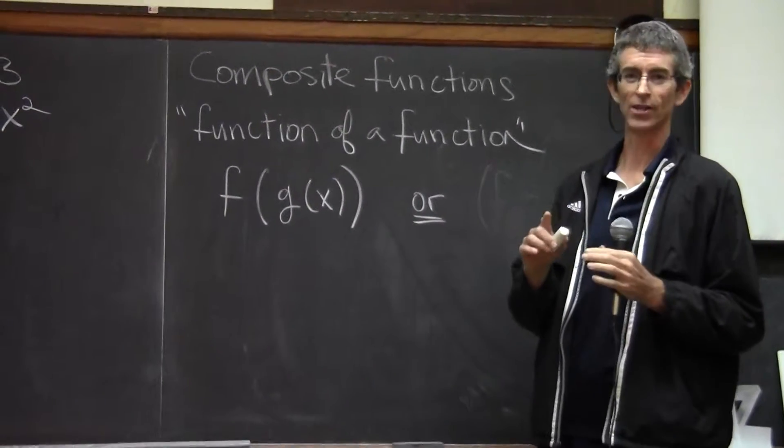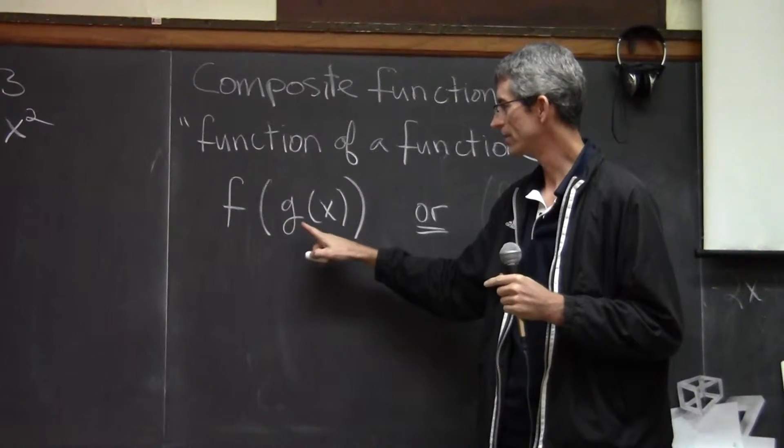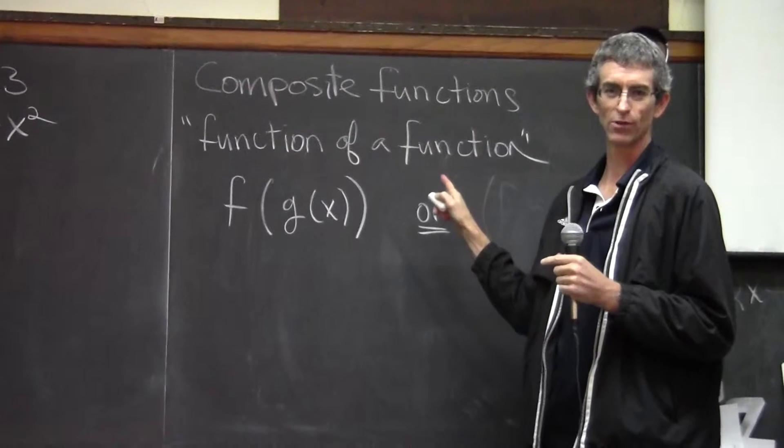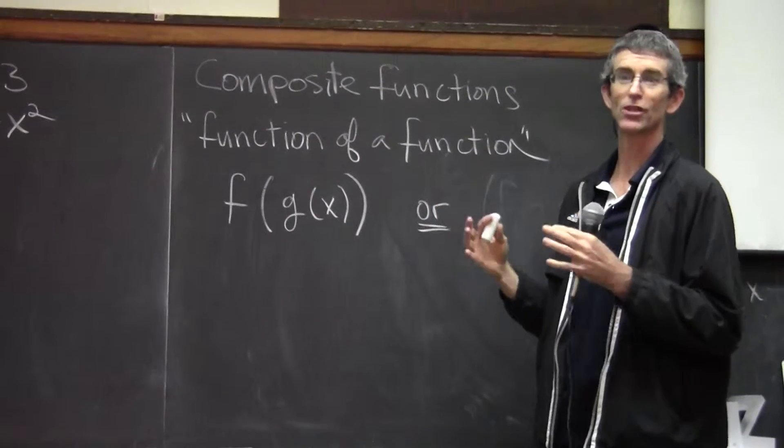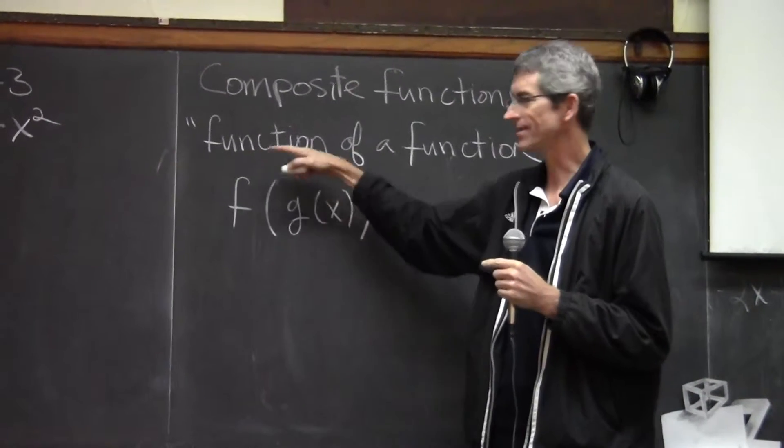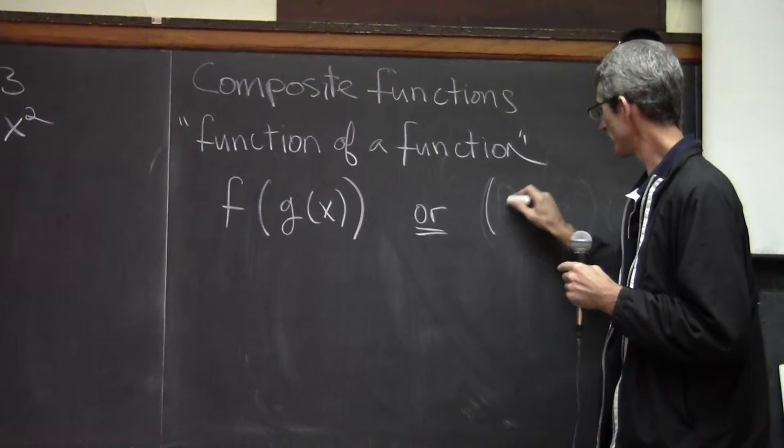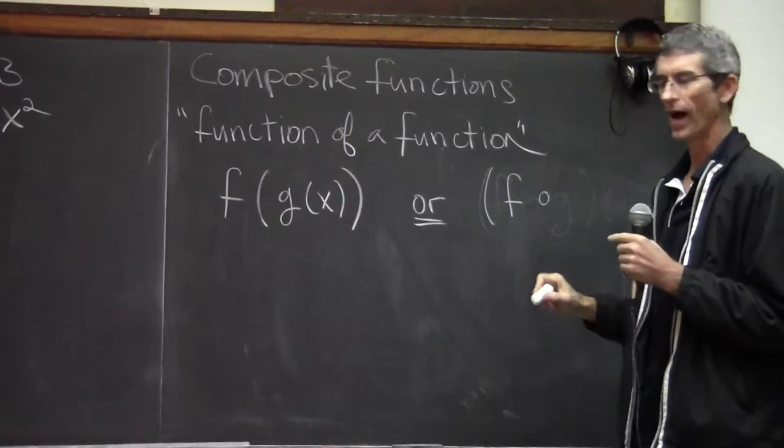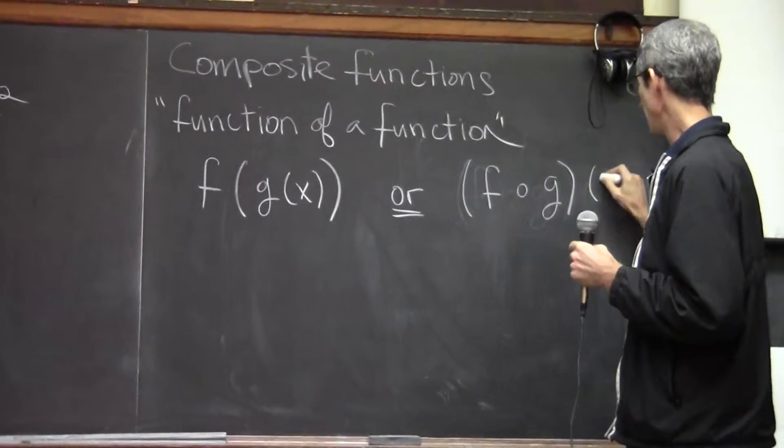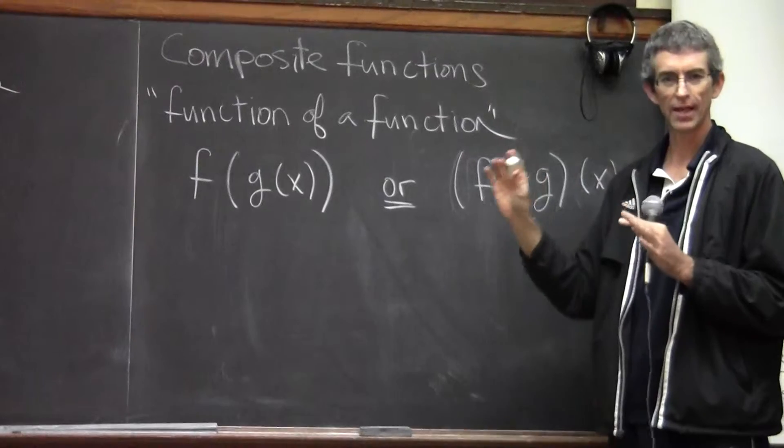First the notation, how do you write it? When you write it like this, this is one way to write it, f of g of x. It's like a function of a function. That's what it means to do a composition of functions. So you have one nested inside of another one. Another way you'll see it written is f and then a little open dot g like that and then you may have an x outside of that. So these are just two different ways of writing. It's the same thing though.